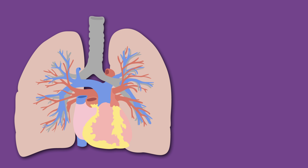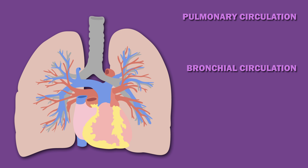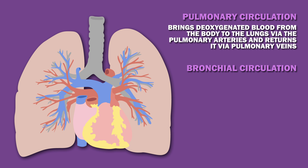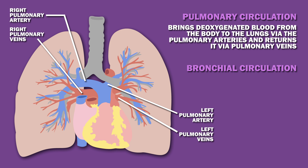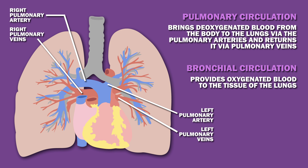The lungs have a unique blood supply with two forms of circulation: pulmonary and bronchial. The pulmonary circulation brings deoxygenated blood from the body to the lungs via the pulmonary arteries and returns it via pulmonary veins. Meanwhile, the bronchial circulation provides oxygenated blood to the tissue of the lungs.